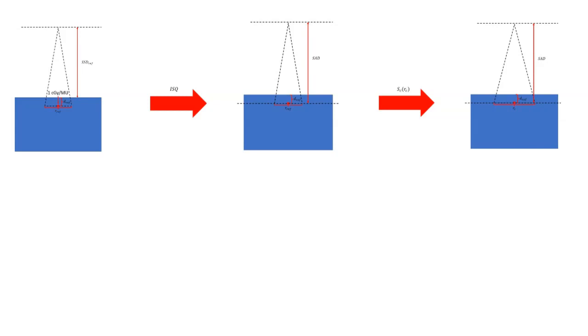And then we can go ahead and place any blocks or tertiary MLC shaping we might have, which is accounted for with the phantom scatter factor. You have that smaller field size that's defined by some tertiary blocking.